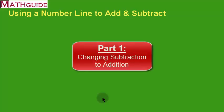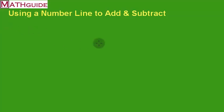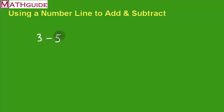First things first, what I like to talk about is how to change a subtraction problem to an addition problem. So if we're going to subtract numbers, the way you change that to an addition problem is real simple. You change the last number and make it the opposite of whatever the number is, and then change the problem to an addition problem.